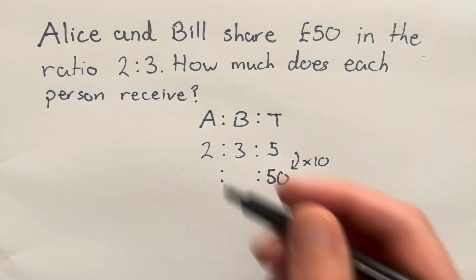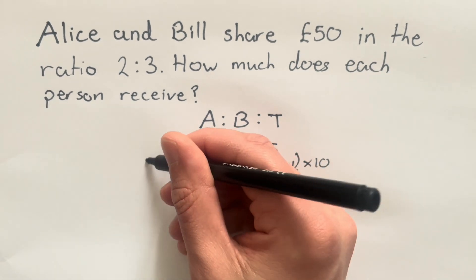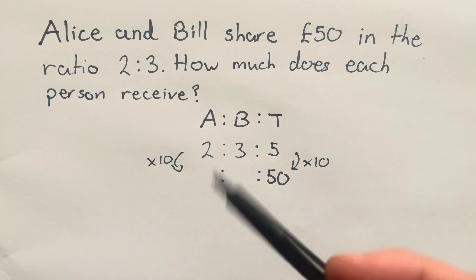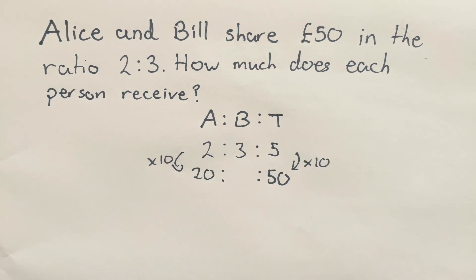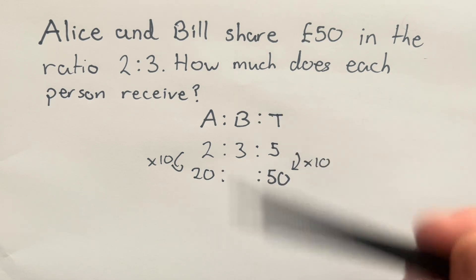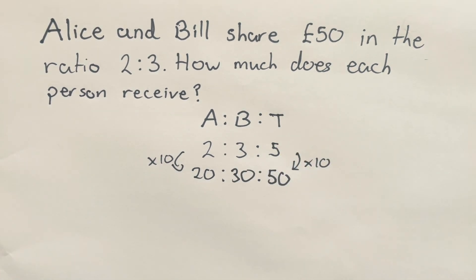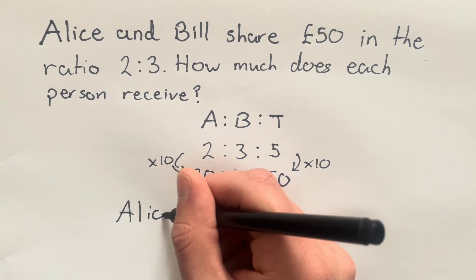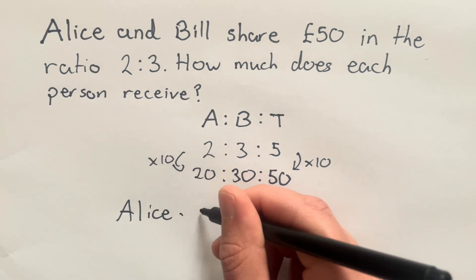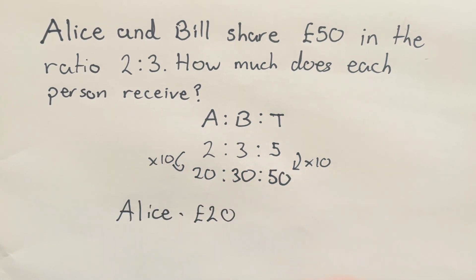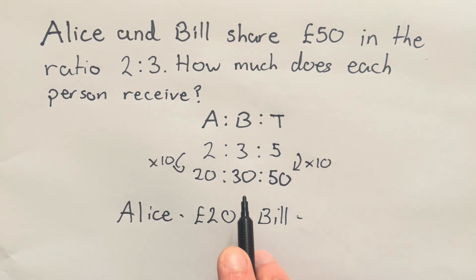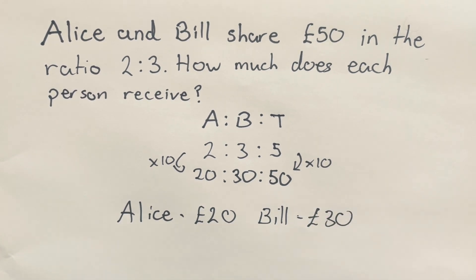Since I've multiplied five by 10 to make 50, I'm going to do the same throughout the rest of my ratio. I'm multiplying everything by 10. So for Alice, that's two times 10, which is 20. For Bill, that's three times 10, which is 30. And I now just need to take these two parts from my ratio as my answer. I see that Alice receives £20 and Bill receives £30. That's my answer.